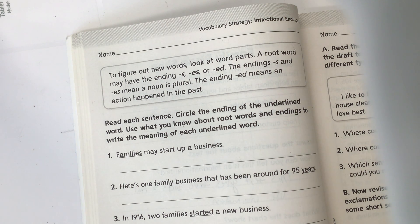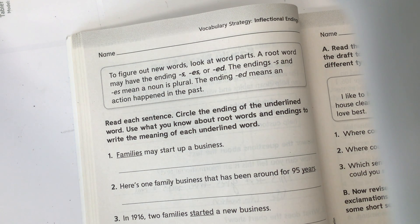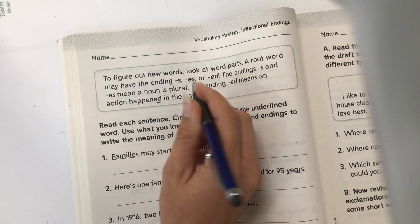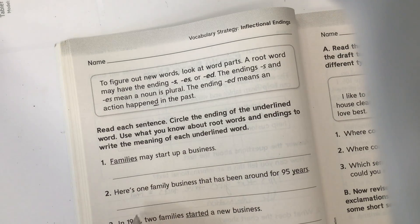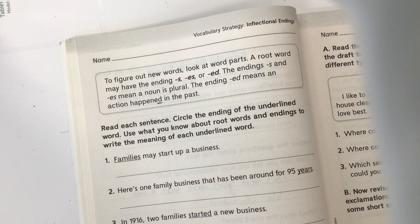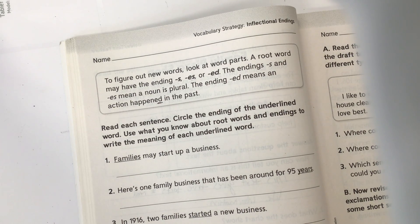The ending S and ES mean the noun is plural. The ending ED means an action happened in the past. S and ES is plural, which means more than one. Read each sentence. Circle the ending of the underlined word. Use what you know about root words and endings to write the meaning of each underlined word.